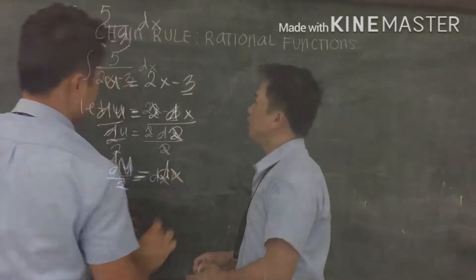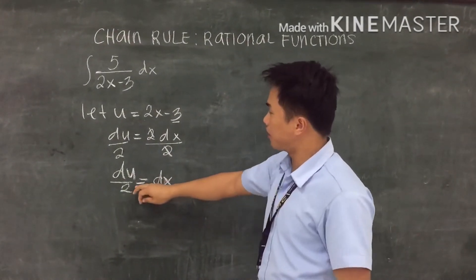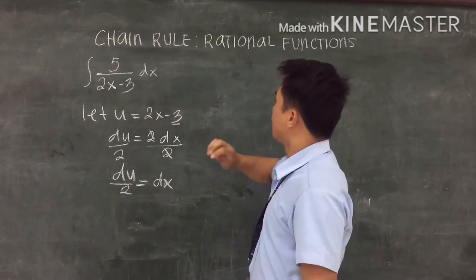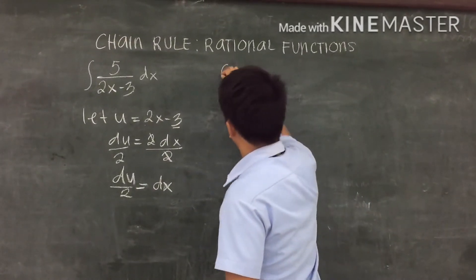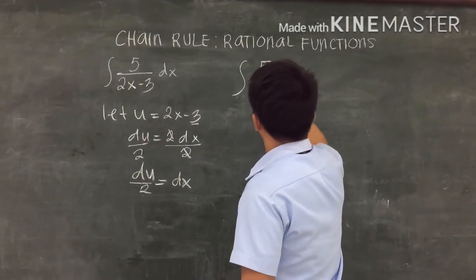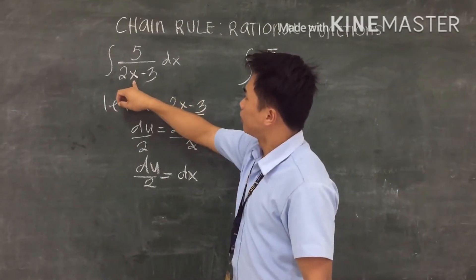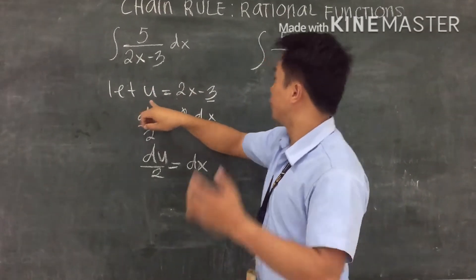We now integrate this function. Since we have the value of dx, we can change the value in this side. So integration of 5 over u, because 2x minus 3 we can replace with u, and the value of dx is du over 2.